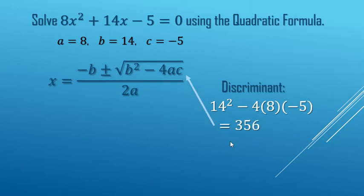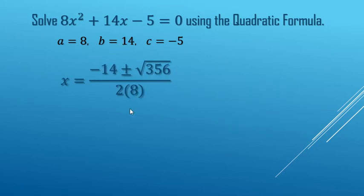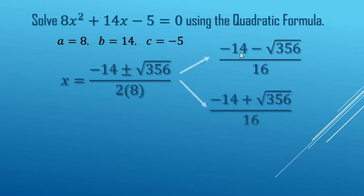So 356 goes in underneath the radical there. Now we can also replace the b with 14 and the a with 8 right there. And now we're going to break it up into two smaller chunks, do the minus chunk here and then the plus chunk there. We did 2 times 8 for 16 there.